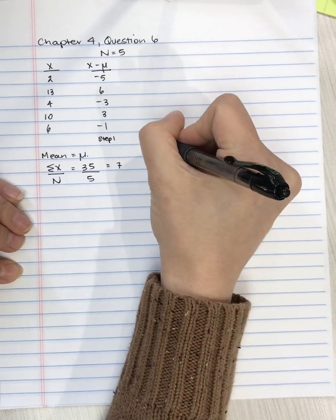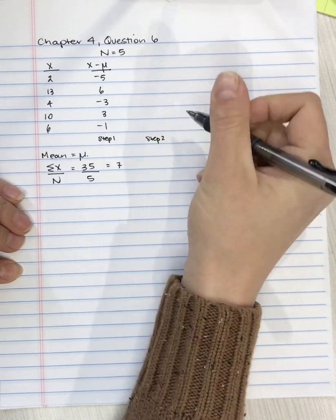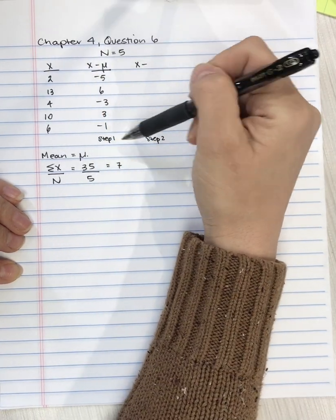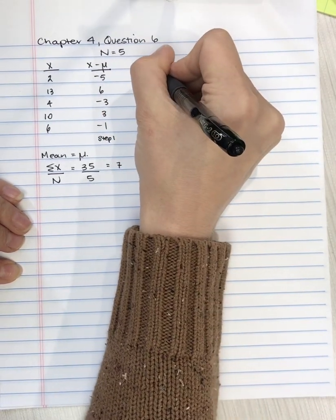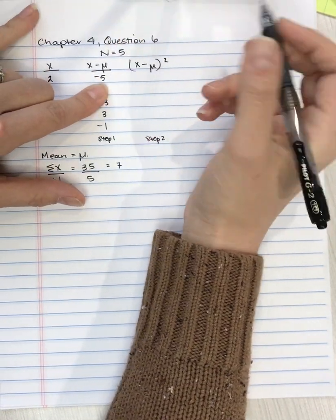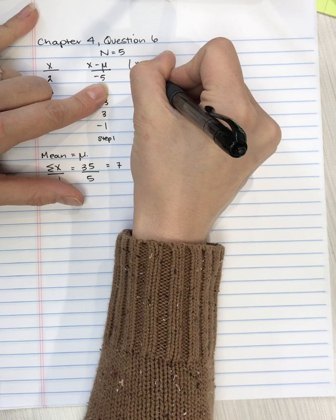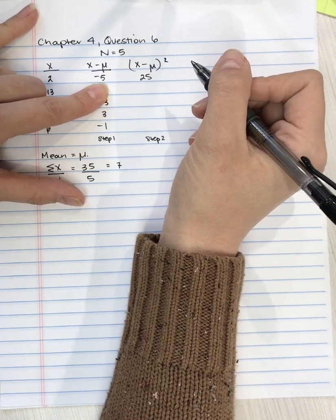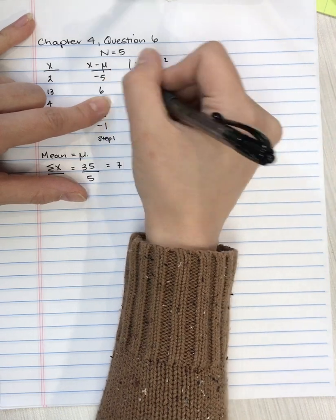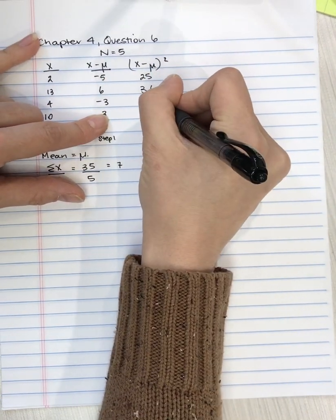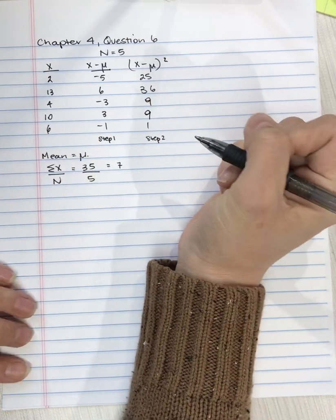Step 2, we need to take each of these deviation scores and square it. So negative 5 times negative 5 is 25, because when you square a negative, you get a positive. So then 6 squared is 36, so we've got 9, 9, and 1.